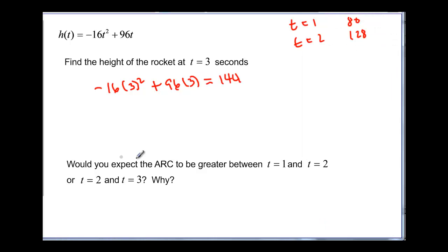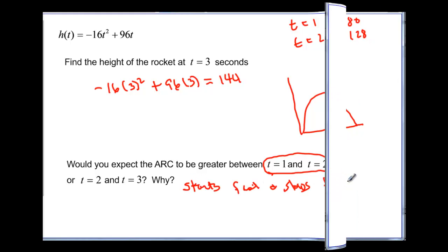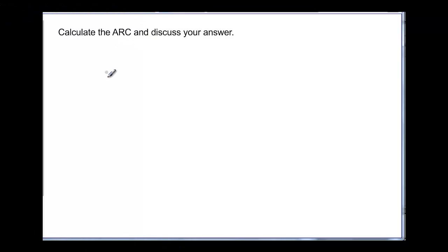So would you expect the average rate of change to be greater between 1 and 2 seconds or between 2 and 3 seconds? Well, I can sketch this graph for you right now. It starts on the ground, it goes up, and then it lands. I don't know exactly what the vertex is, but I can guess that it's probably after 3. So it's steep, it goes real fast at the beginning, and then it levels off. So I would say between 1 and 2 should be the bigger average rate of change because it starts fast and slows towards peak.